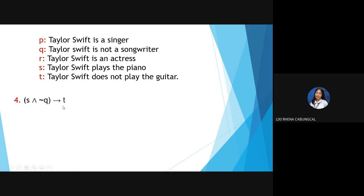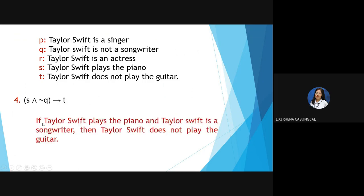Number 4: If S ∧ NOT Q, then T. We have a conditional sign here. Answer: 'If Taylor Swift plays the piano and Taylor Swift is a songwriter, then Taylor Swift does not play the guitar.' We removed the NOT from Q to negate it.